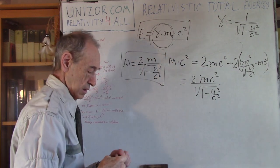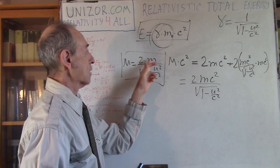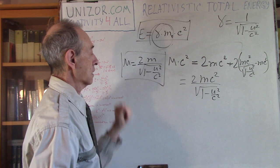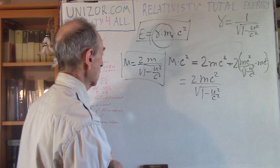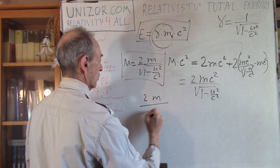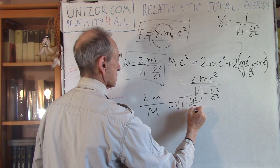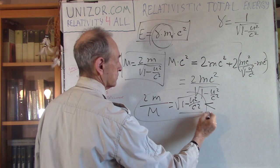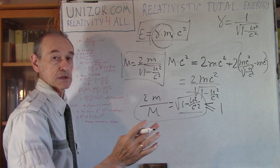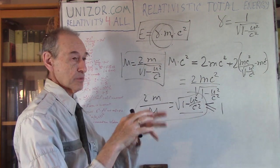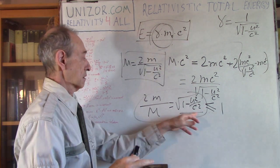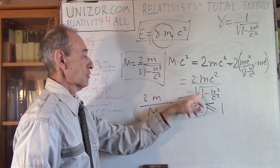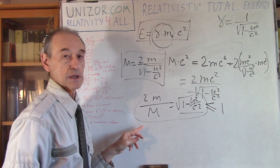This obviously means the sum of the two pieces, 2m, is less than the initial mass M. We can rewrite it as 2m divided by M equals the square root of (1 minus u²/c²), which is less than one. It equals one only if u equals zero — if there is no speed. So if the pieces are not moving, the sum of masses is exactly equal to M, but if they are moving with speed u greater than zero, we lose a certain amount of mass which is converted into kinetic energy.